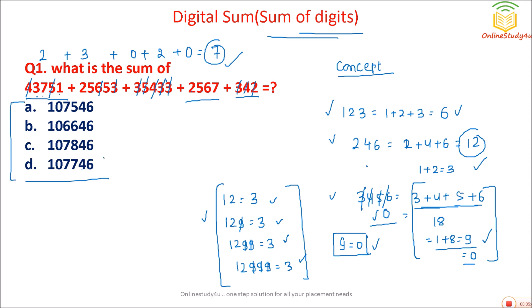Now check which option gives a digital sum of 7. Option A: 6 plus 4 is 10, plus 15 is 25 — digital sum 5, not 7. Option B: 18 plus 4 is 22, plus 1 is 23 — digital sum 3, not 7. Option C: 6 plus 4 is 10, plus 15 is 25, plus 1 is 26 — digital sum 8, not 7. Option D: 6 plus 4 is 10, plus 14 is 24, plus 1 is 25 — 2 plus 5 equals 7. So option D is the correct answer.